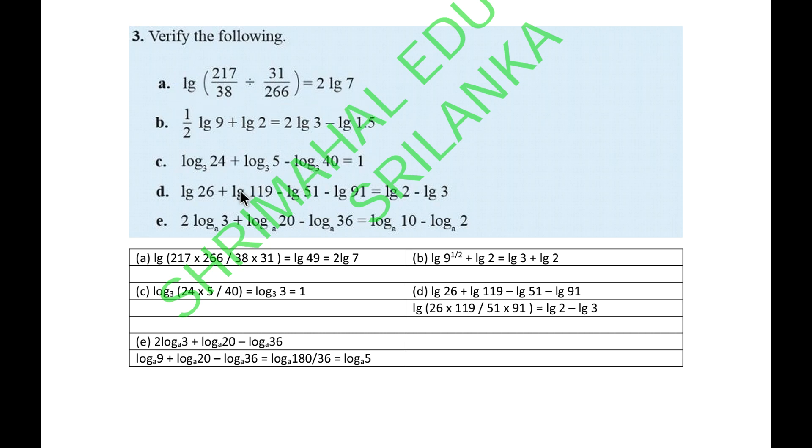The D part, log 26 plus log 119 minus log 51 minus log 91. As soon as you simplify, you need to multiply 119 by 26 and divide by 51, divide by 91. The answer is log 2 minus log 3. That is accurate.